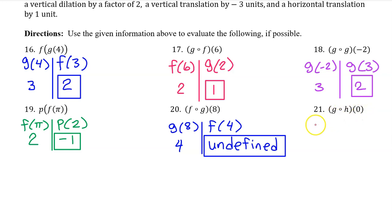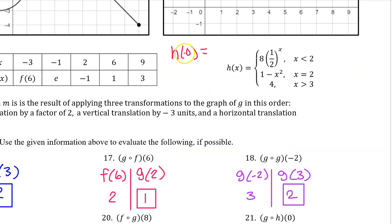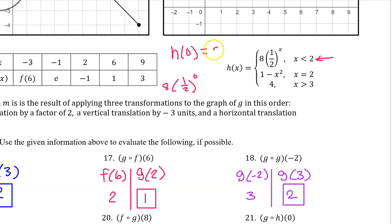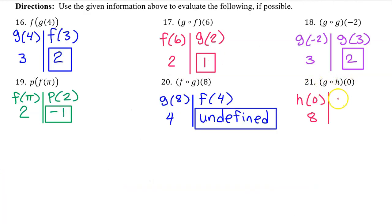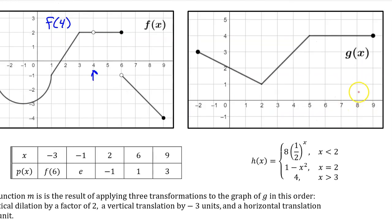Number 21. Working from right to left we begin with H at 0. H is this piecewise function. For a piecewise function your first task is to decide which piece applies — the statements on the right give us the domain of each piece. 0 is less than 2, so the first piece applies. Plugging in 0 for X gives us 8 times (1/2) to the 0 power. (1/2) to the 0 power is 1, so this is 8 times 1, which is 8. Sliding to the left we arrive at function G and must evaluate G at 8. G at 8 is 4.